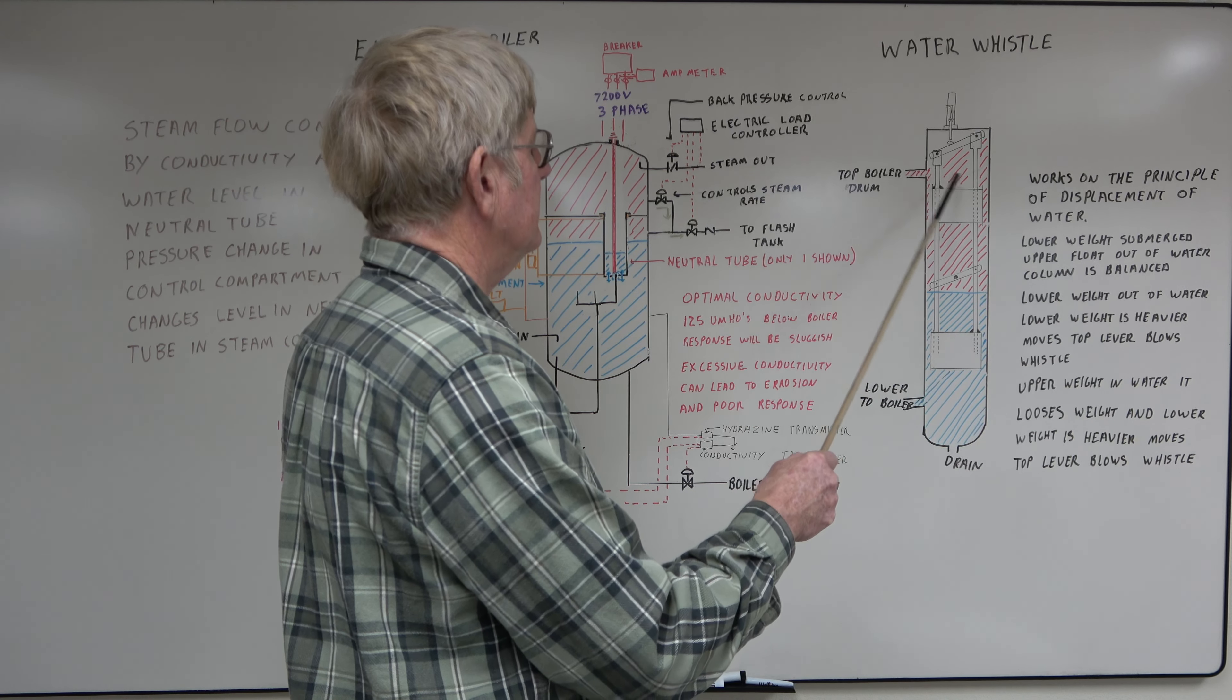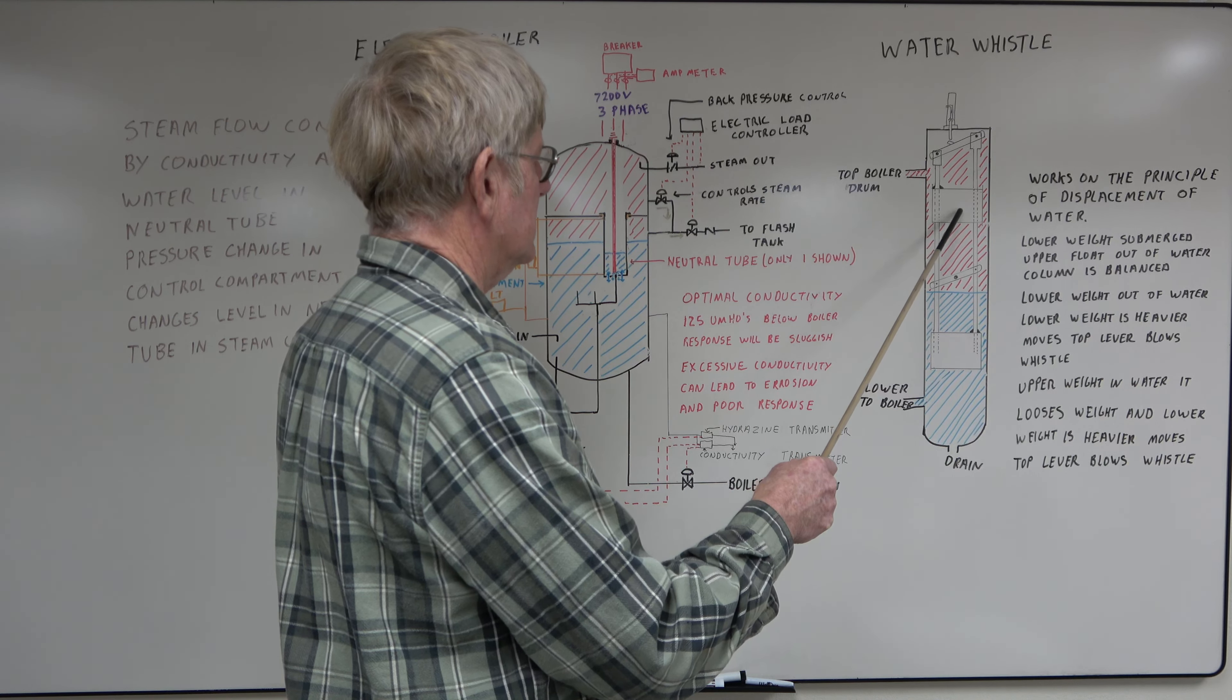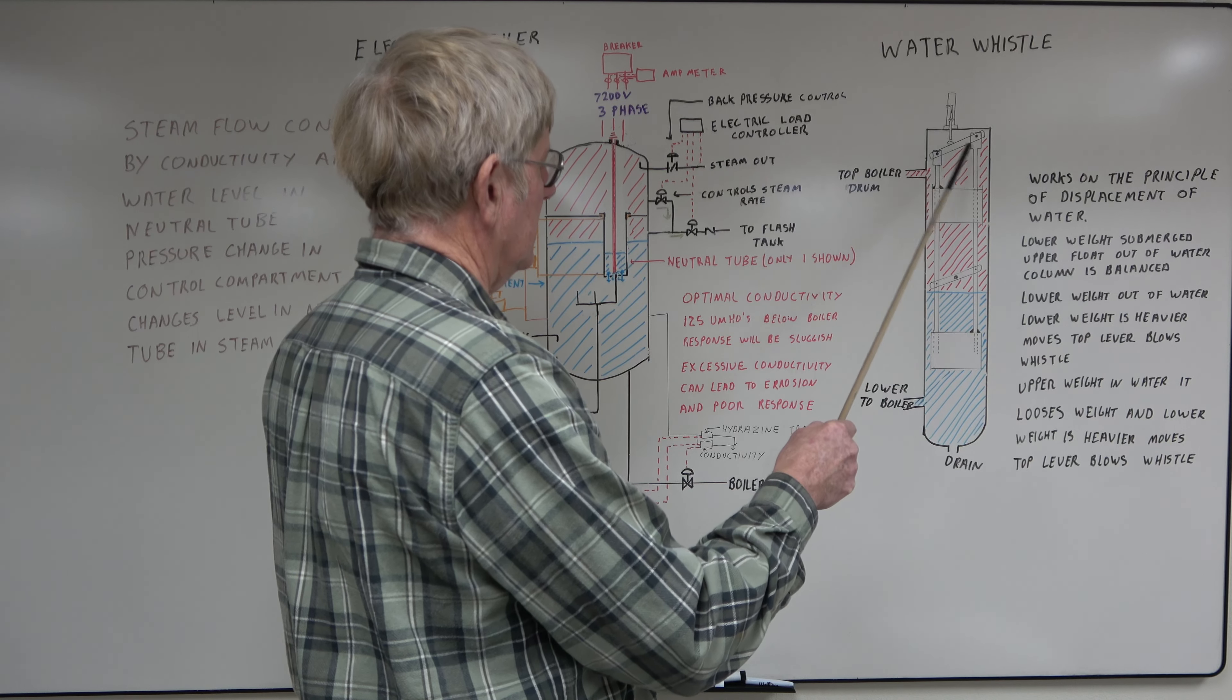Likewise, if the level gets too high, this upper weight will start to float. It changes the weight between the two. This weight's heavier again. It'll pull up and blow the whistle.